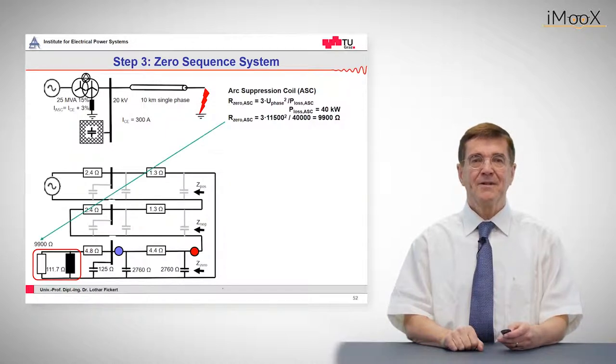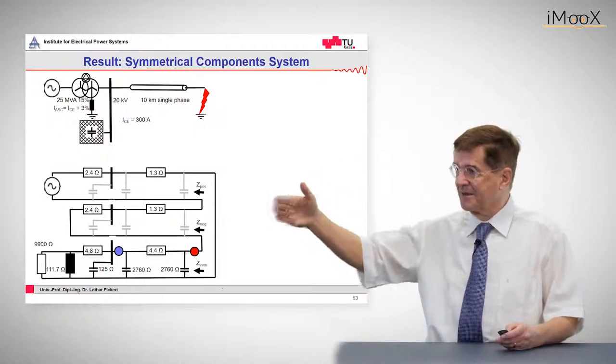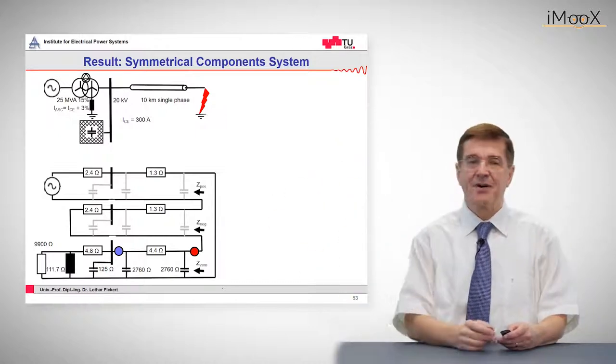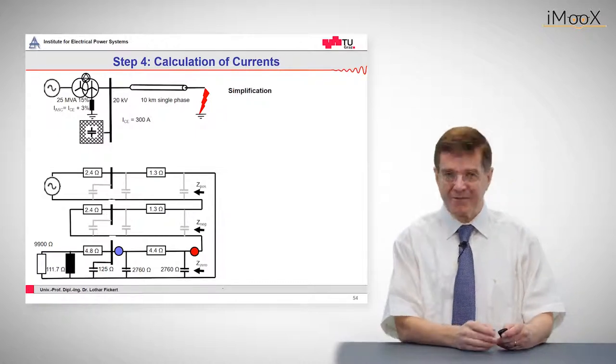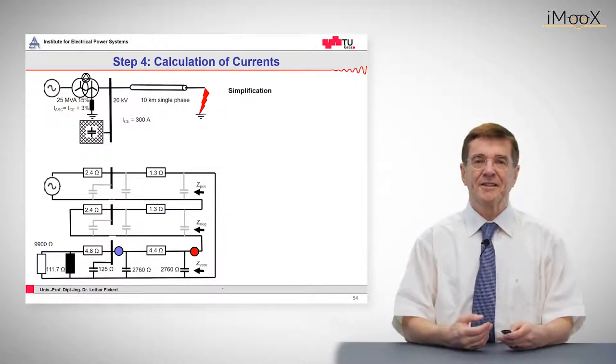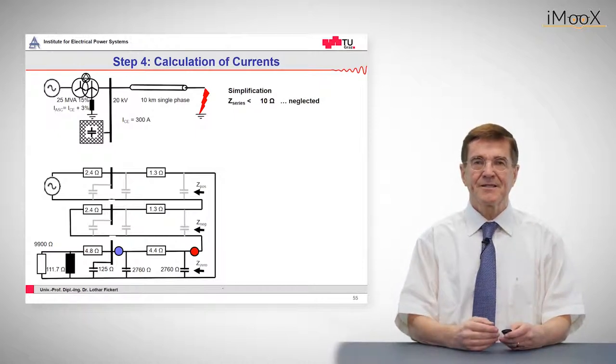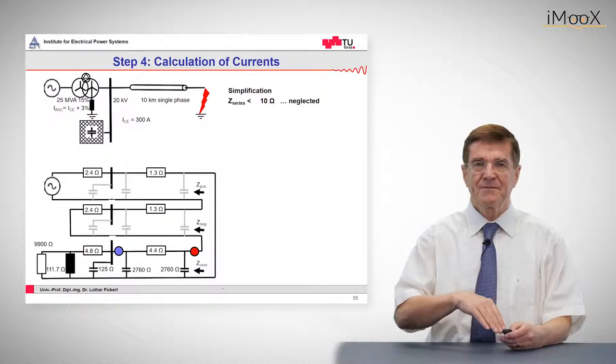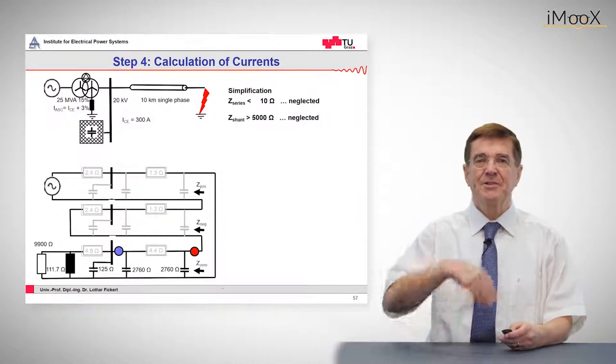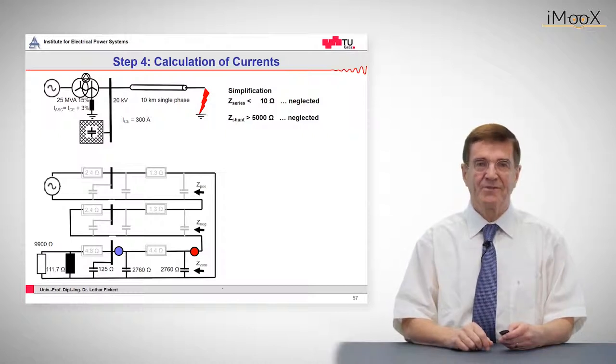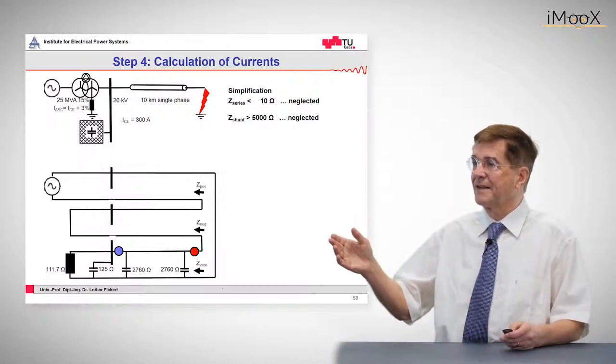Now we have the full picture as you see: the positive sequence, negative sequence, zero sequence, and now we go into the calculation. First I want to simplify with you the calculation, and that means we omit all series reactances which are below 5 ohms or 10 ohms, and also the shunt impedances which are above 5000 ohms. All these are neglected. I indicate this in gray and then I take them just out.